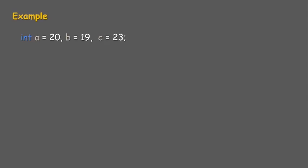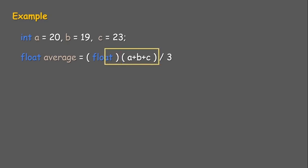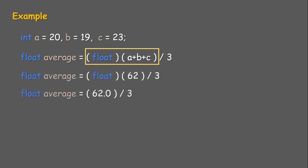Example: int a = 20, b = 19, c = 23; float average = (float)(a + b + c) / 3. With the division operator, both operands a+b+c and 3 are integers, so integer arithmetic would be performed and the result would be an integer — the fractional part would be skipped, causing data loss. To avoid this, the expression a+b+c is explicitly cast to float, enabling mixed-mode arithmetic so the result including the fractional part is stored in the variable average.